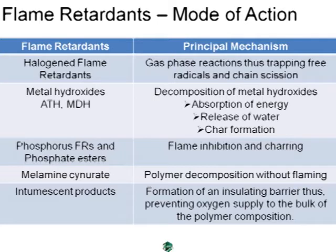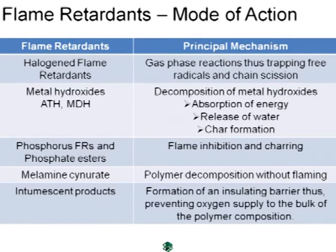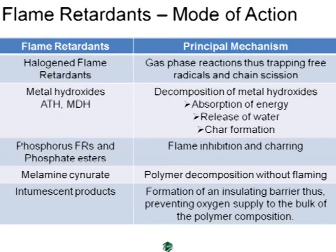The next category is phosphorus-containing flame retardants and phosphate esters. They act by inhibiting the flame and also promote the charring process. We also have other materials like melamine cyanurate and intumescent products, which form a so-called insulating barrier that stops the flow or supply of oxygen into the bulk of the polymer composition.